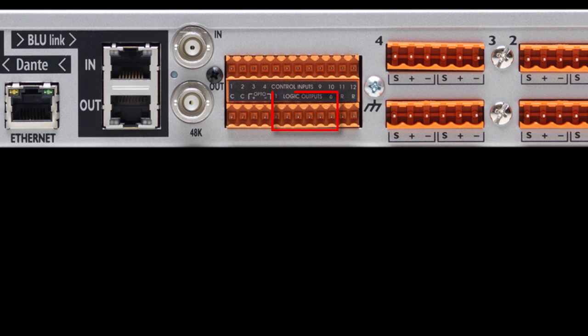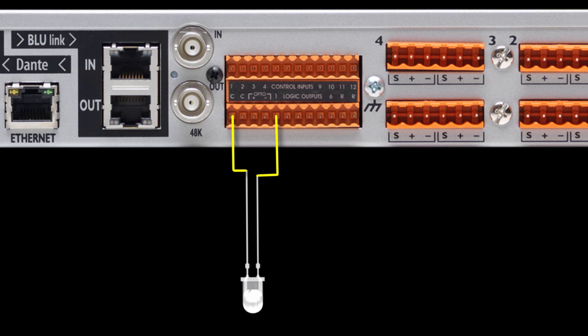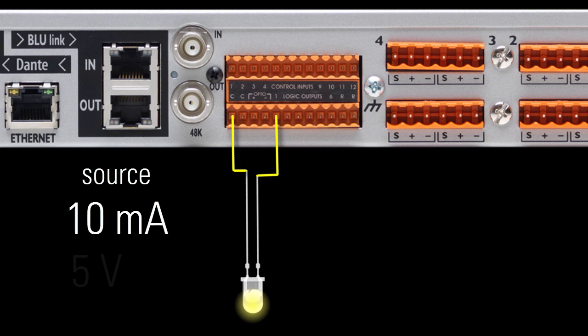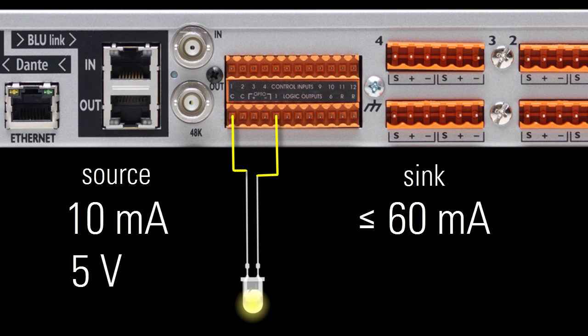The six GPO ports allow the SoundWeb London to control external devices using voltage. Each GPO port can be told to turn off, generating no voltage, or to turn on, sourcing 10 milliamps at 5 volts. This is useful for turning on and off external LEDs or opening and closing external relays. Each GPO port can also sink up to 60 milliamps at up to 50 volts when connected to an external power supply, which is useful if you need to control higher current and voltage.